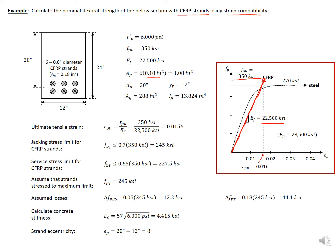Some values we'll need for our analysis: we need our ultimate tensile strain, which is just our ultimate strength divided by our modulus. We also have two stress limits for CFRP strands. The jacking stress limit is 0.7 times the ultimate strength, giving us 245 ksi. The service stress limit is 0.65 times the ultimate strength, which gives us 227.5 ksi.